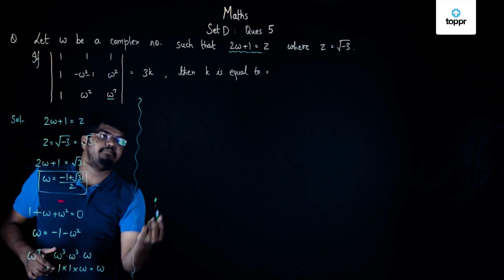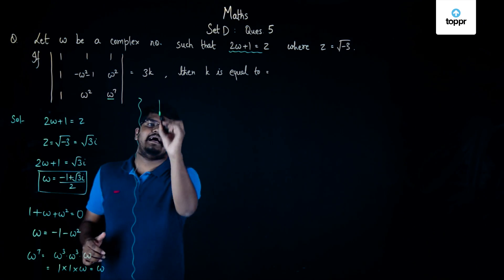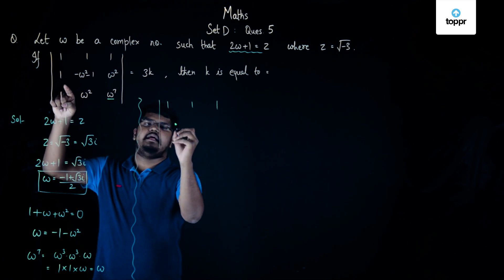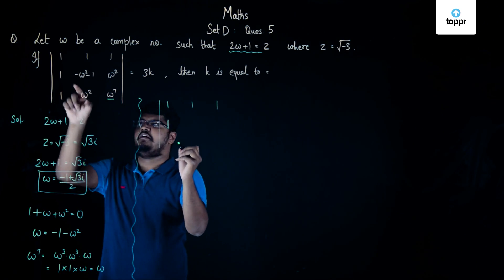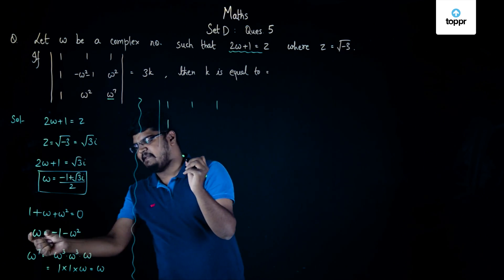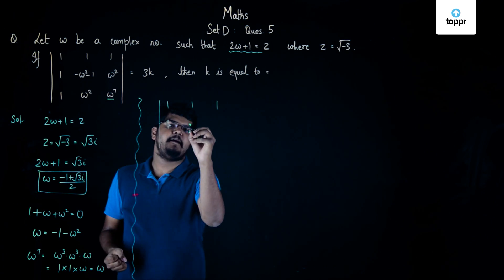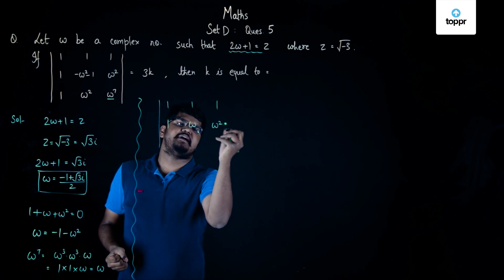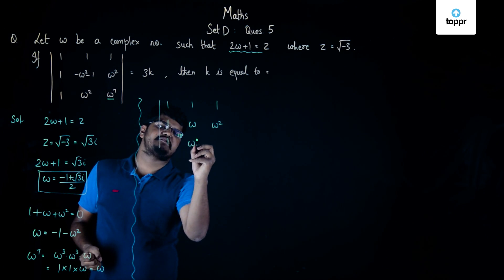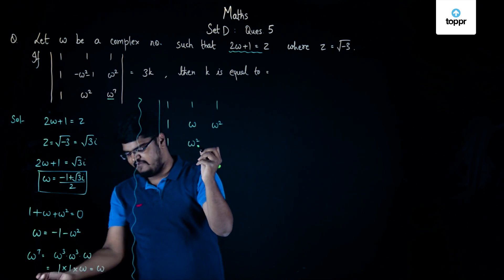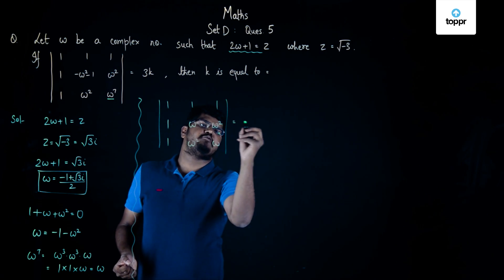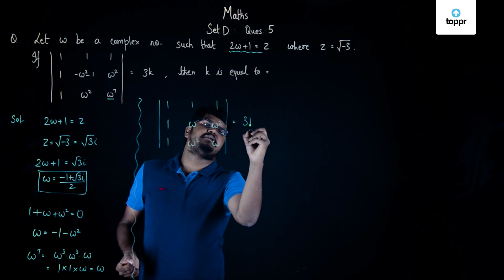The determinant which is given to us can be rewritten as: first row 1, 1, 1; second row 1, and then minus omega squared minus 1 will be replaced by omega, and there is omega squared; and the third row has 1, omega squared, and omega to the power 7 which becomes omega. This value is equal to 3k.